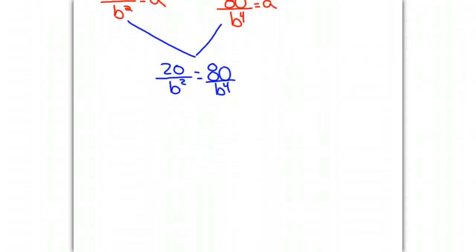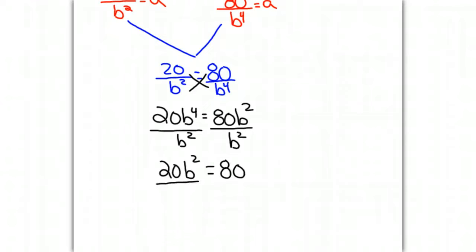I'm going to cross multiply and solve for b. So 20 b to the 4th will equal 80 b squared. I can divide both sides by b squared, and this will give me 20 b to the 4th divided by b squared, which is b squared, equals 80. Divide both sides by 20, and b squared will equal 4. Take the square root of both sides and b equals 2.